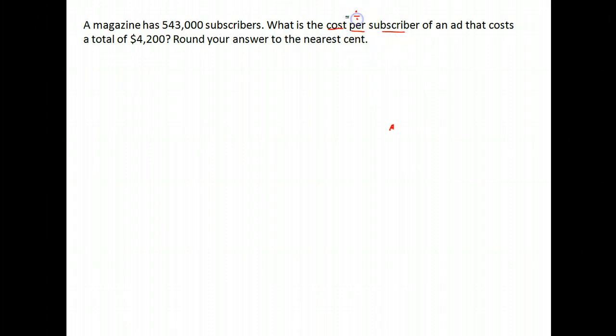The word per means to divide. So we're going to take the dollar amount divided by the number of subscribers or people, and that will give us our cost per subscriber. So look closely. Our cost was $4,200. We're going to divide that by the number of subscribers, 543,000.